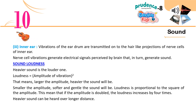3. Inner ear: vibrations of the eardrum are transmitted onto the hair-like projections of nerve cells of the inner ear. 4. Nerve cell vibrations generate electrical signals perceived by the brain, which in turn generate sound.